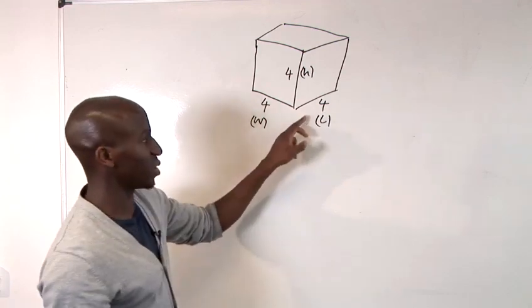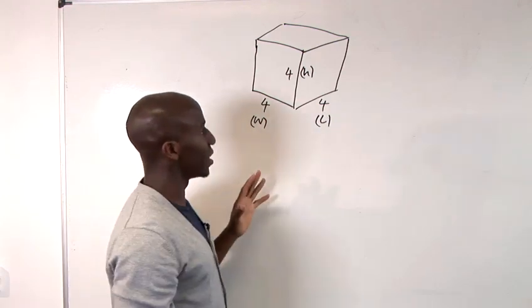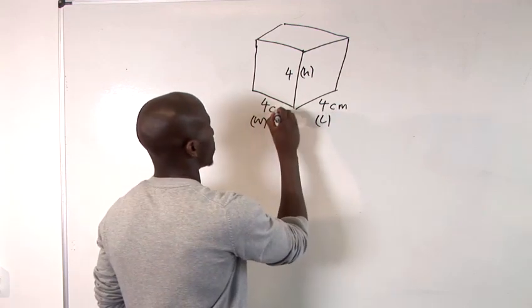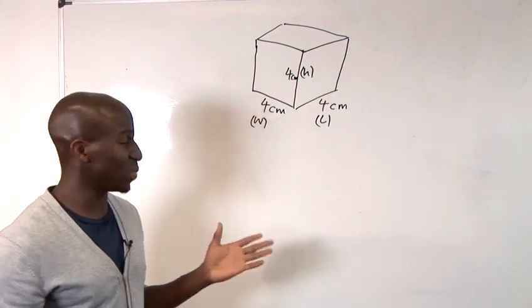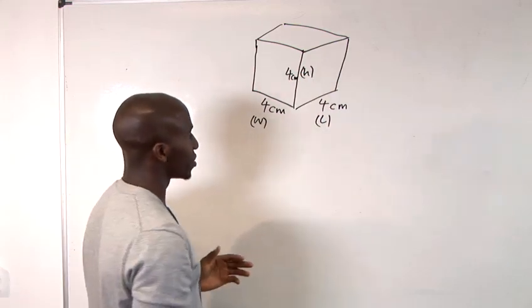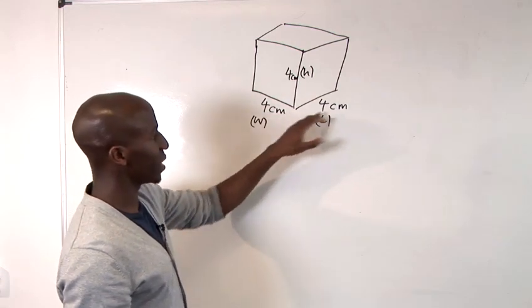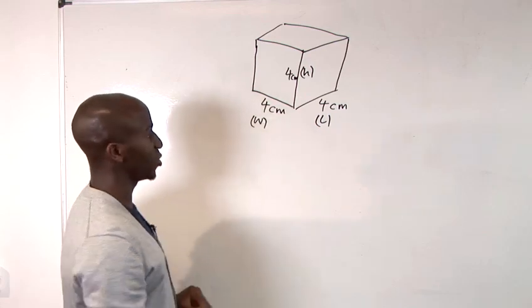The units that we're going to use for this is centimetres. But I'm going to show you how to change from centimetres to cubic metres. First of all, we want to change these measurements into a value for the volume in centimetres cubed.